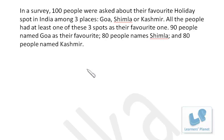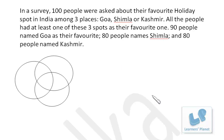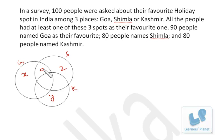Four questions are based on this given information. First, let's draw the Venn diagram to represent the data. Here, Goa, Shimla, and Kashmir are the three circles. You must attend the basic session of Venn diagrams so the concept will be better cleared in your mind.